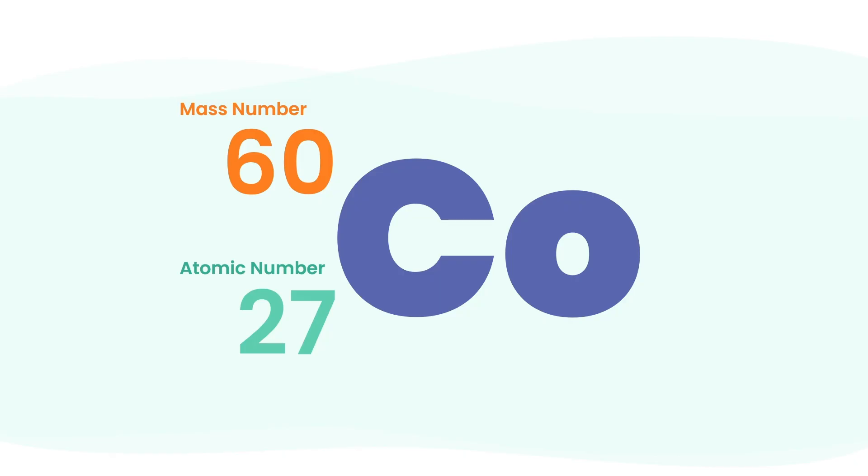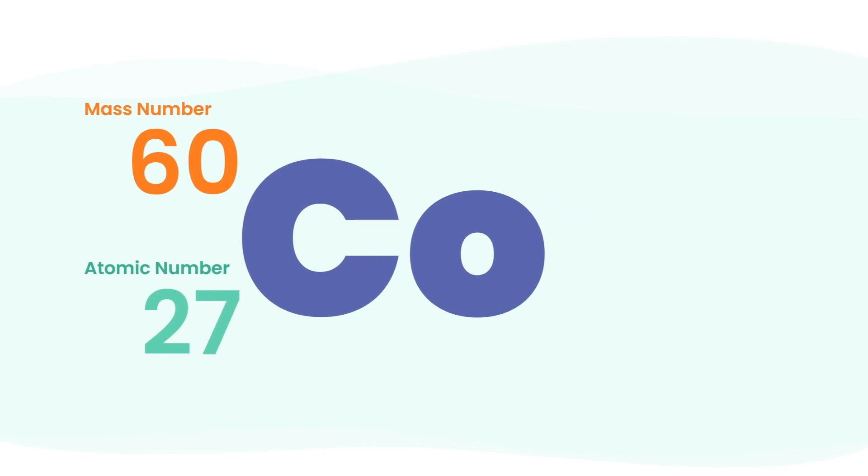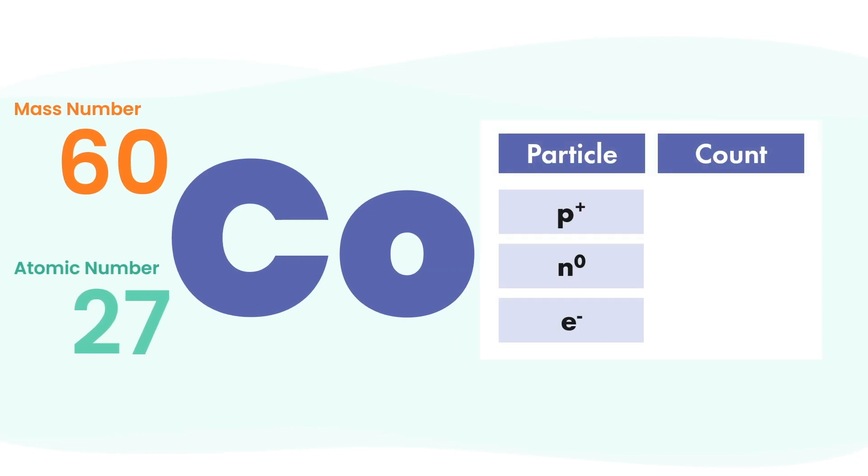Let's break this isotope down further by looking at its subatomic particles. We start with protons. Cobalt's atomic number is 27, so it has 27 protons. To find neutrons, subtract the atomic number from the mass number: 60 minus 27 gives us 33 neutrons. And since it's a neutral atom, it also has 27 electrons.